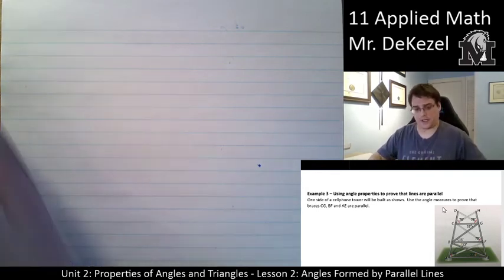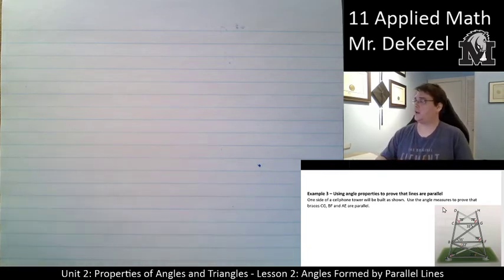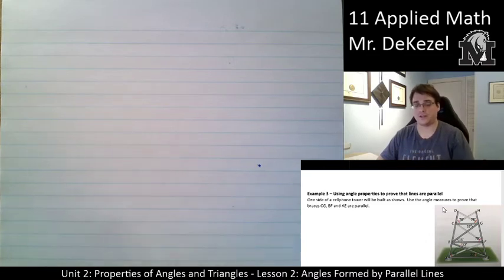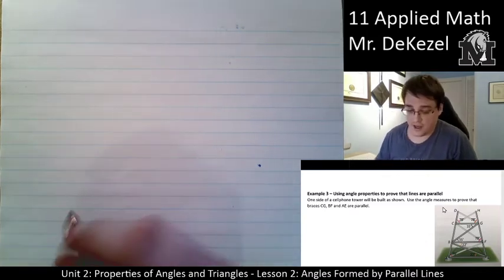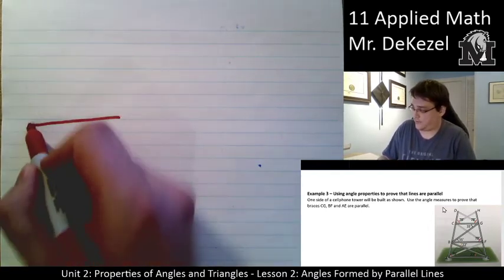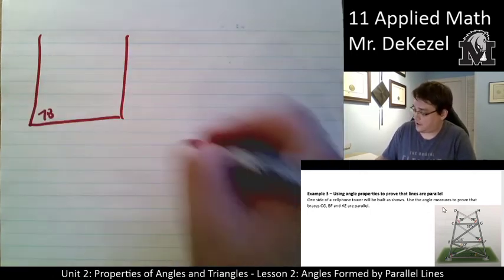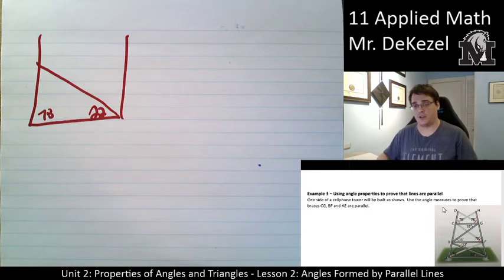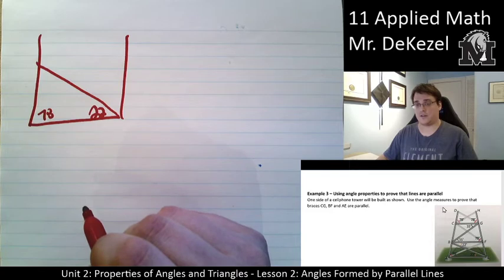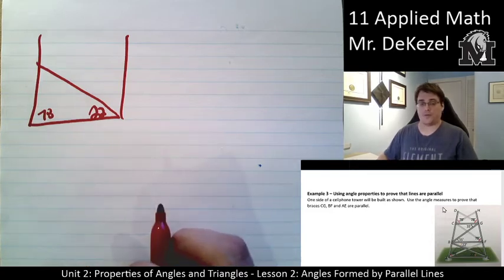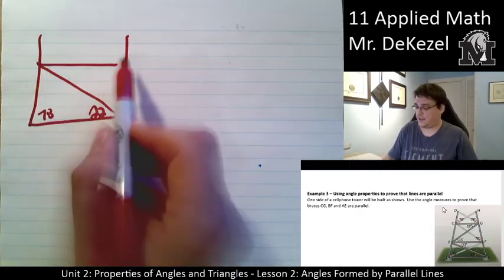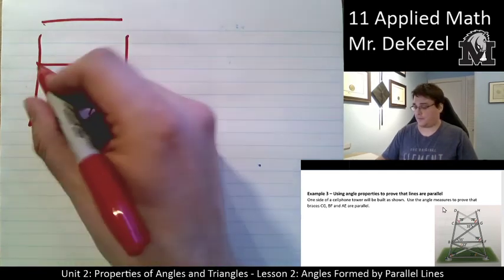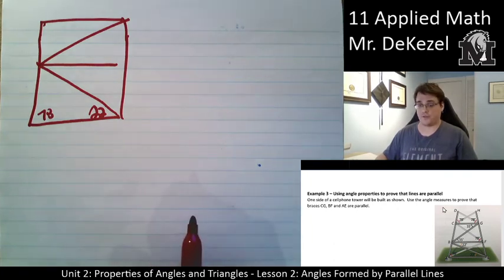Now on to example 3. One side of a cell phone tower will be built as shown. Use the angle measures to prove that braces CG, BF, and AE — the horizontal ones — are parallel. At the bottom left we have an angle of 78 degrees, and with the pole, 22 degrees on the right. We want to find out if those three lines are all parallel, and we're going to do that by proving that angles are equal.